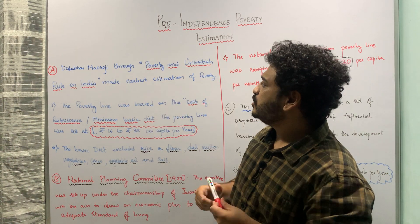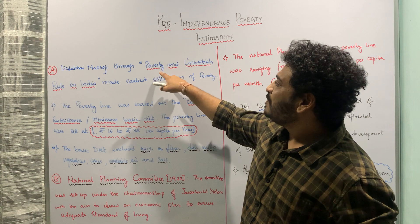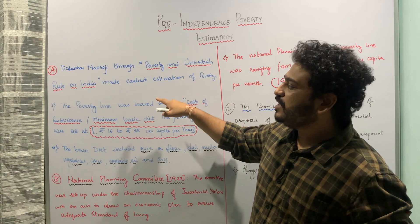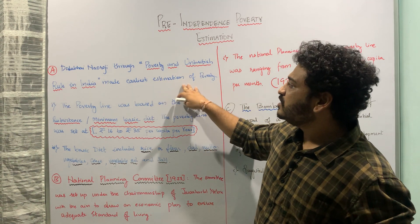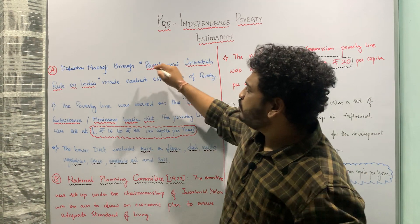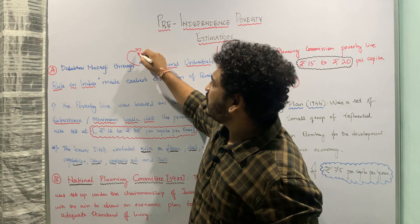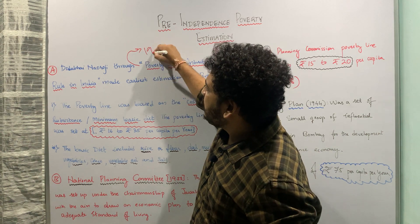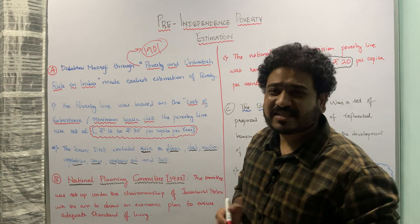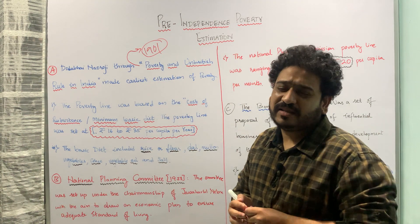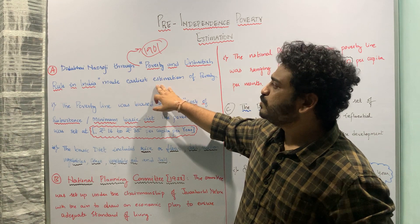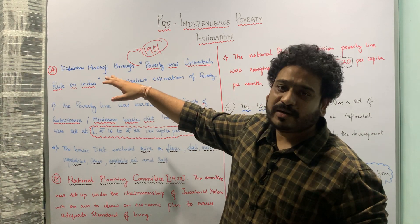Dadabhai Naoroji, through his book 'Poverty and Un-British Rule in India', made the earliest estimation of poverty. This book was written by Dadabhai Naoroji in 1901. So the earliest estimates of poverty in the Indian context can be seen from this book written by Dadabhai Naoroji.